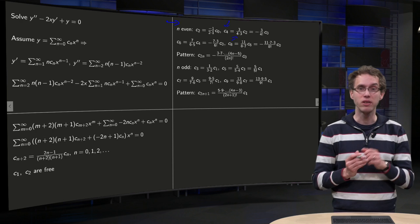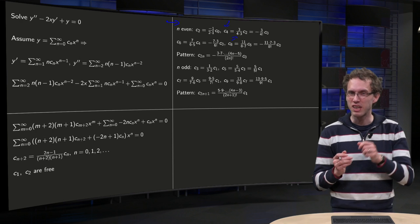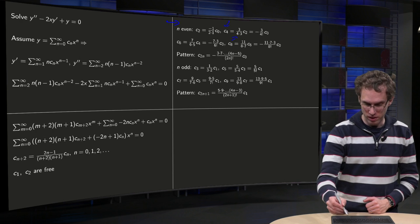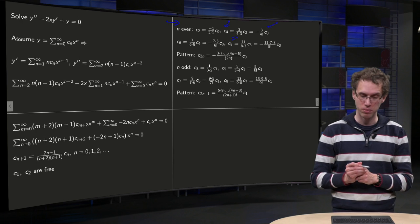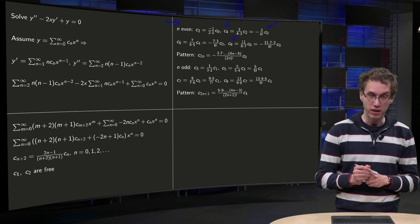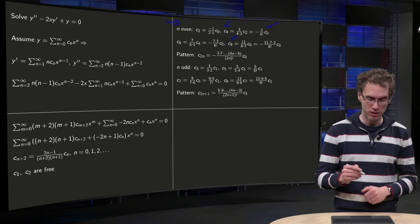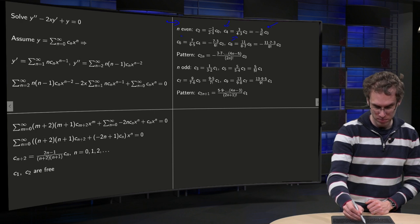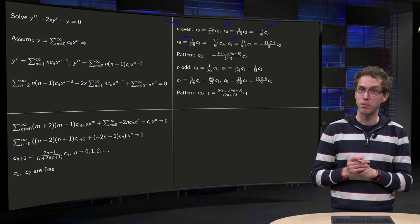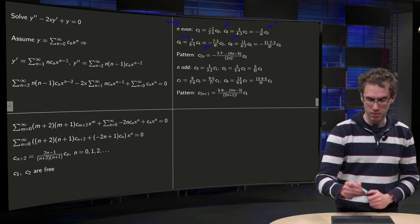And we do not cancel out the factor of 3, because we will see a pattern, and we will miss the pattern if we would cancel out the factor of 3 now. Then, because we end up with -3/(4!) times c0. Then c6, we find that by plugging in n = 4, we get 2×4 - 1 = 7, divided by 6×5 times c4. And c4 has a 4! in the denominator, so that gives us a 6! and 7×3 in the numerator.